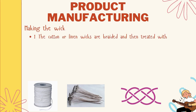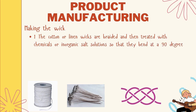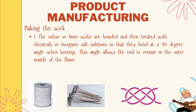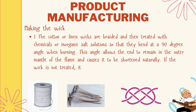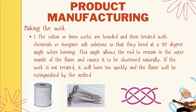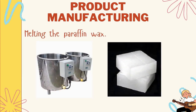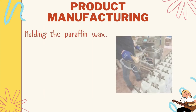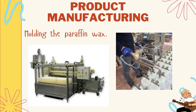Product manufacturing — making the wick: The cotton or linen wicks are braided and then treated with chemicals or inorganic salt solutions so that they bend at a 90-degree angle when burning. This angle allows the end to remain in the outer mantle of the flame and causes it to be shortened naturally. If the wick is not treated, it will burn too quickly and the flame will be extinguished by the melted wax. For the wax: it is heated and melted into a clear, near-liquid state in a huge metal kettle machine. Wax melted by direct flame can become dark colored or can contain small pieces of carbon char, so the molten wax must be carefully filtered to remove impurities. For molding the candle, the wax is cooled to slightly above its melting point and poured into a molding table located above the molds. The molds are preheated so the wax will flow evenly into them. After the wax is poured, a jacket around each mold is filled with cold water to speed up the solidification process.